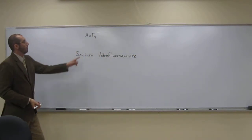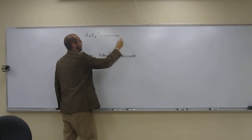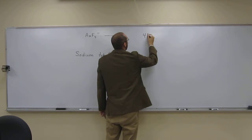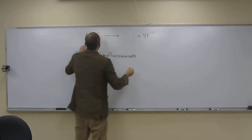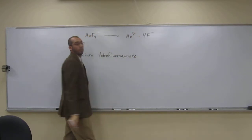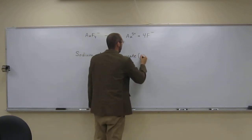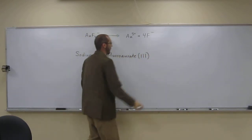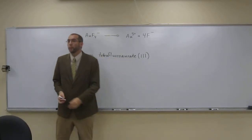And remember, fluorine is negatively charged. So if you want to, you can even do it again, right? So we've got four F-minuses, like that. So if the whole thing is minus charged, then that must mean the gold must be 3 plus, like that. So in parentheses, we put a 3. So this is called sodium tetrafluoroaurate(III).